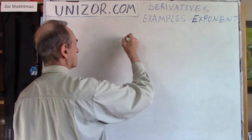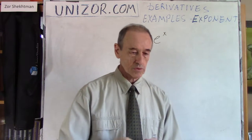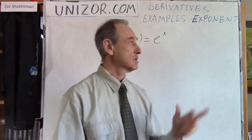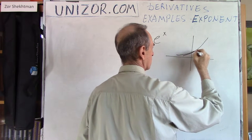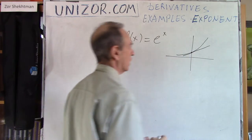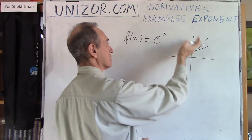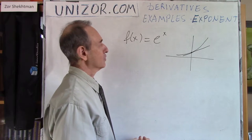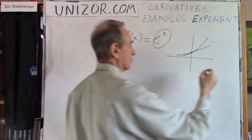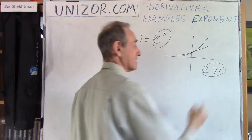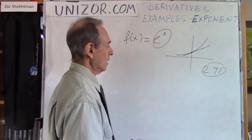Let's consider the basic exponential function e to the power of x. You remember how I introduced the number e. I was talking graphically about the tangent at that particular point. I said that if it's 2 to the power of x, the tangent would be less than 45 degrees. If it's 3 to the power of x, it's greater than 45 degrees. But 45 degrees would be exactly at some number which I called e, with approximate value 2.71. It's actually an irrational number, so it has an infinite number of decimal digits. That's the definition.